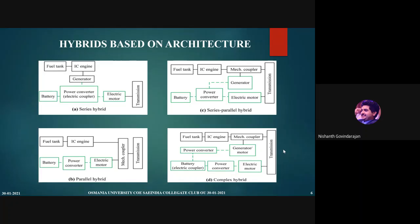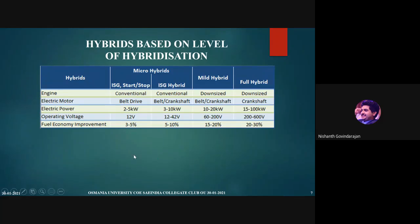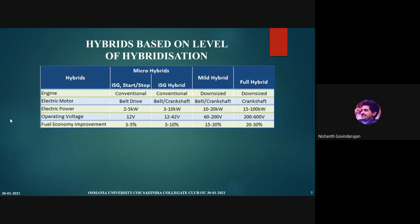Now, hybrids based on the level of hybridization — you must have heard micro hybrid, mild hybrid, strong hybrid, full hybrid. The major classifications are: micro hybrids with an integrated starter generator plus a start-stop system; next, an integrated starter generator hybrid; then a mild hybrid; and finally a full hybrid. A micro hybrid with just a start-stop system using a lead-acid battery, which helps in switching off and on at traffic lights, has already been introduced in the Mahindra Scorpio.